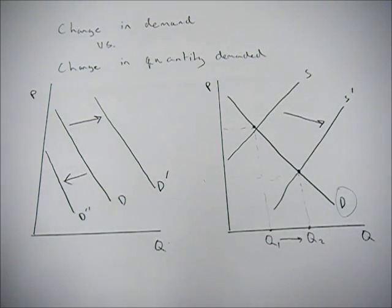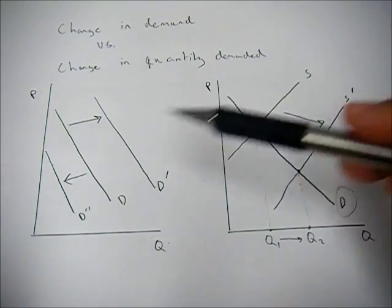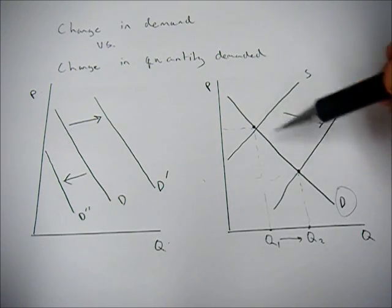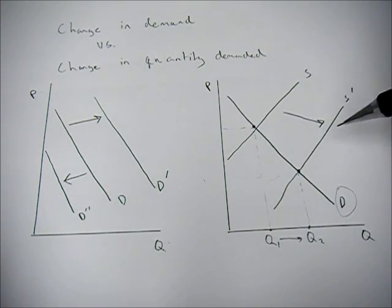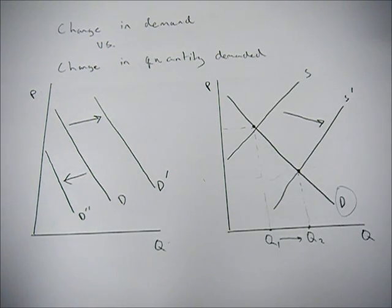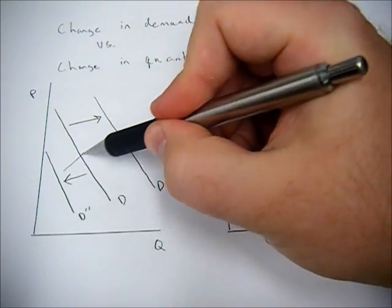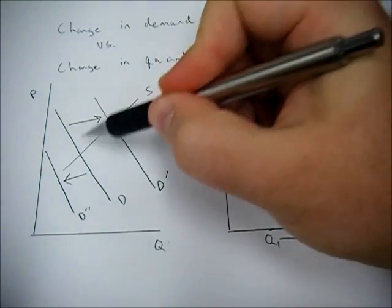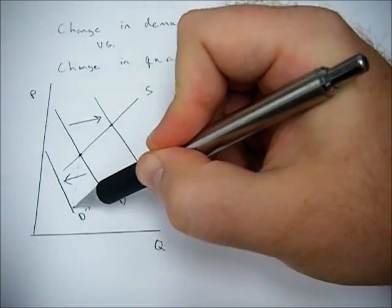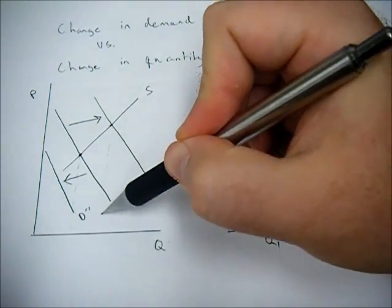And that's the difference between a change in demand and change in quantity demanded. Whether that curve shifts, or whether the intersection, the ultimate amount, the quantity, that is demanded by the consumer changes. It's possible that we could have both. Like if the supply curve intersected here, we would have a change in demand, and a change in quantity demanded.